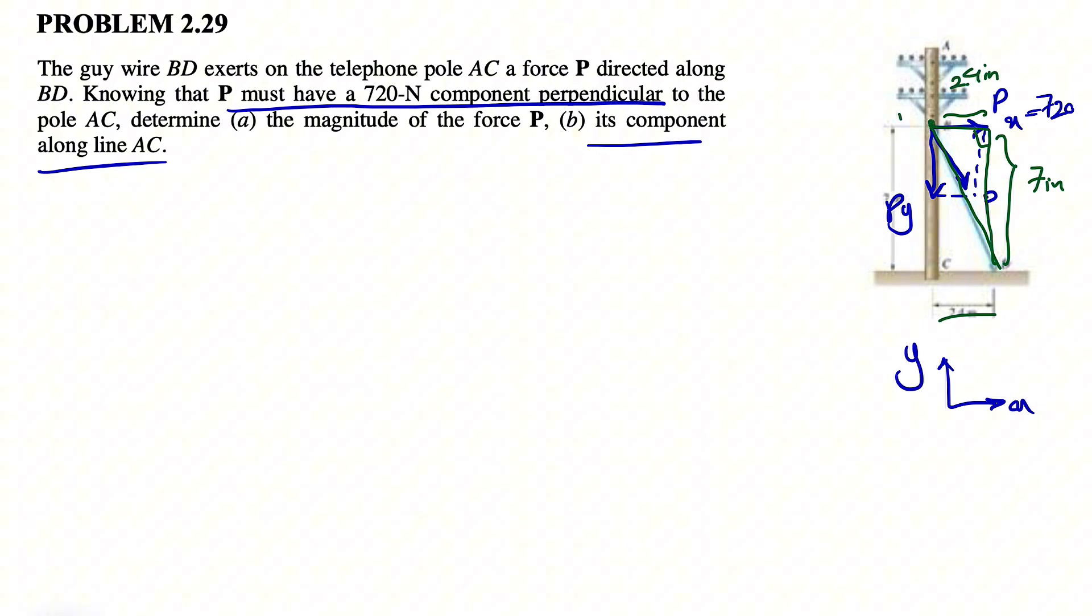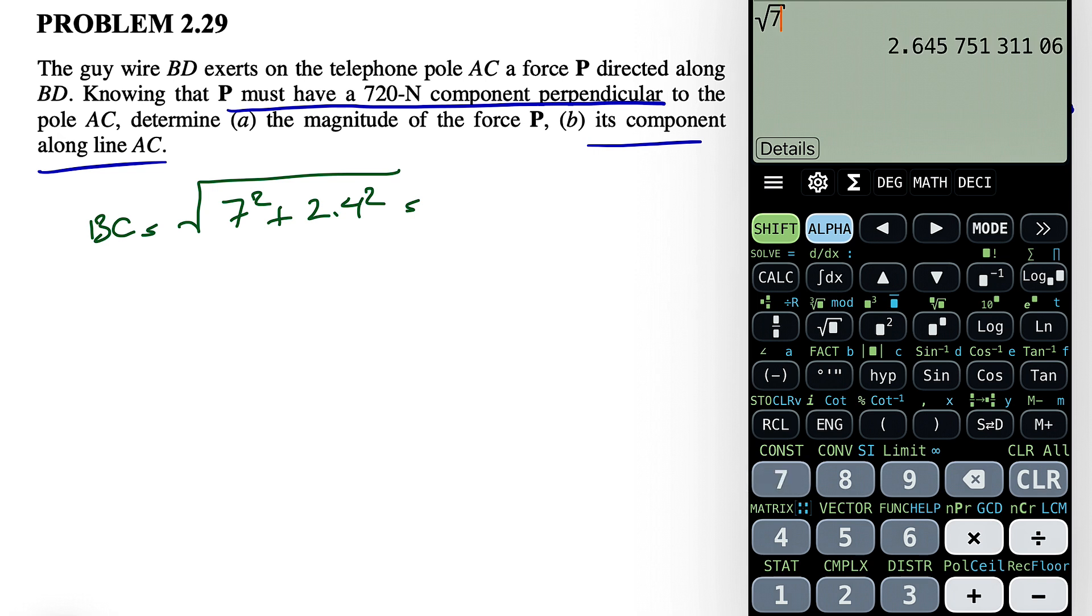So this side was P and we have D in here. If we want to find BD, if we use the Pythagorean theorem, we basically have the square root of 7 squared plus 2.4 squared. Let's see what we get for this. So the square root of 7 squared plus 2.4 squared, that's going to be 7.4.